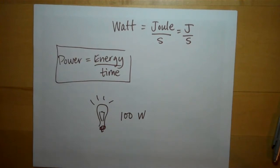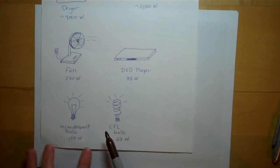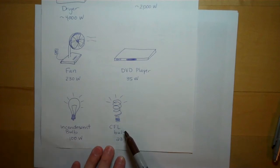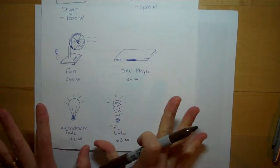Other things will use more or less power depending on their size and what they're doing. So if you look at this set I drew, our little incandescent light bulb needs 100 watts of power. A newer compact fluorescent light bulb uses significantly less.